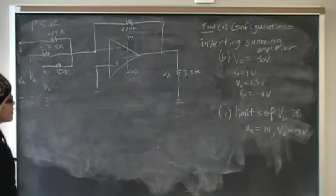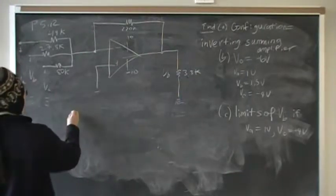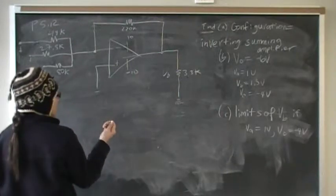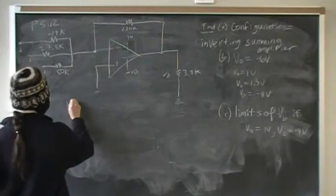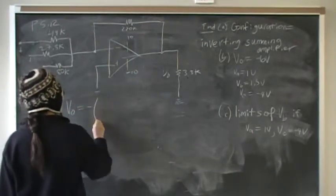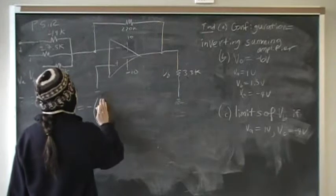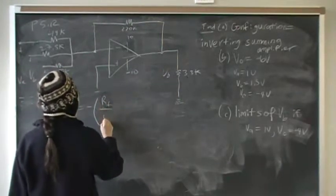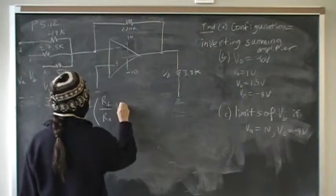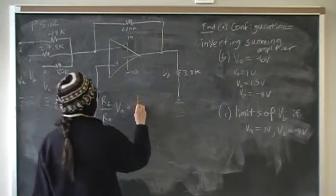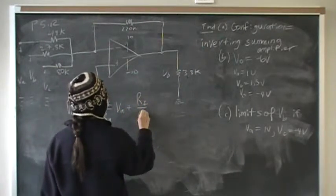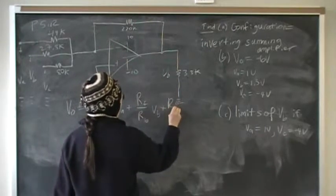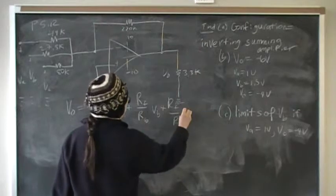So then we use the inverting amplifier formula, which says that Vout = -(RF/RA × VA + RF/RB × Vb + RF/RC × Vc).